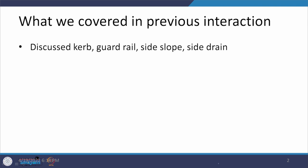Dear students, we are back with our class on geometric design. We have been discussing the various cross-sectional elements which need to be provided on any road system depending on the category of that particular road. In the previous interaction, we talked about 4 elements: the curb, used for demarcation and safety; the guard rail, another safety device; and two elements on the sides of a carriageway — side slopes and side drains, which fall under road margin conditions.